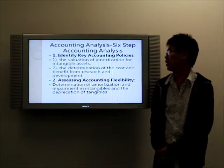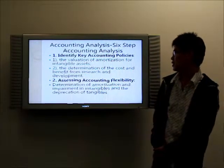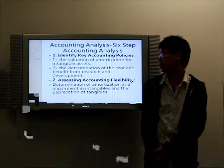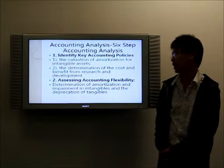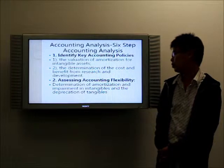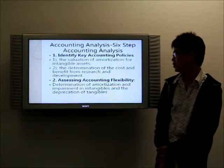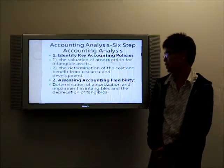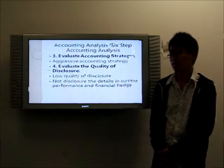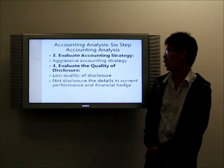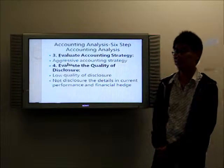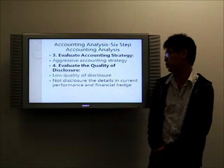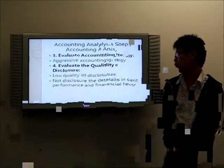Now let's do the six-step accounting analysis. AACO's accounting policy can be identified as the valuation of amortization for intangible assets and the determination of cost and benefit from research and development. However, it has considerable accounting flexibility in the determination of amortization and impairment of intangibles and the depreciation of tangibles. Compared to other companies in this industry, AACO has a quite aggressive accounting strategy to maximize net profit. In terms of quality of disclosure, AACO has quite a low quality of disclosure — it doesn't disclose details on current performance and financial highlights.